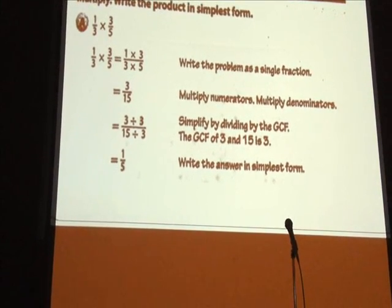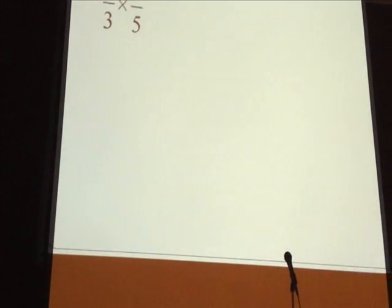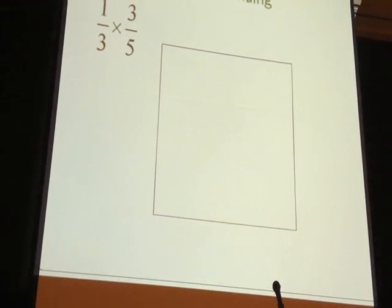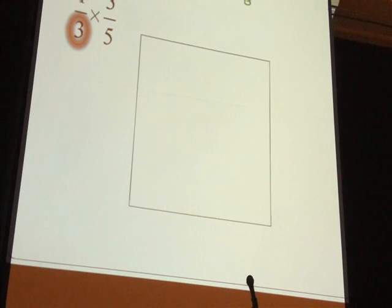So I took that exact same example, and I said, how can I teach that conceptually? What would a common core-type problem? So I took the one-third times three-fifths. And so I said, well, we're going to look at it as an area. And so it's a length times a width.